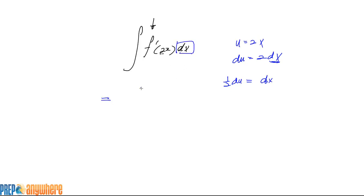So that can be replaced with half of du, and that's going to be replaced with f prime at u, which we get then f at u with half there plus c.